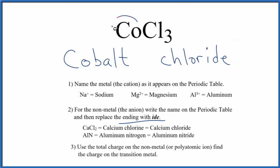But we said cobalt is a transition metal. That means it can have a different ionic charge dependent on what it's bonded to. Here it's bonded to three chlorine atoms. Chlorine, each one, has an ionic charge of one minus.